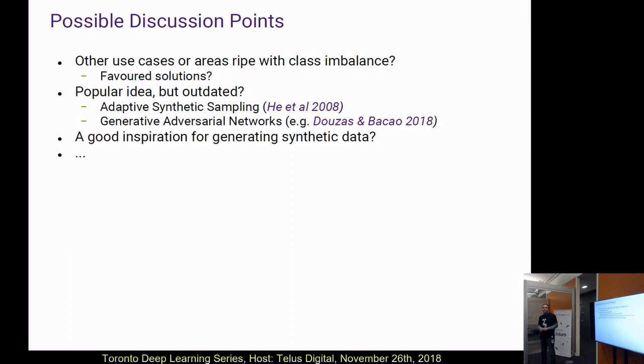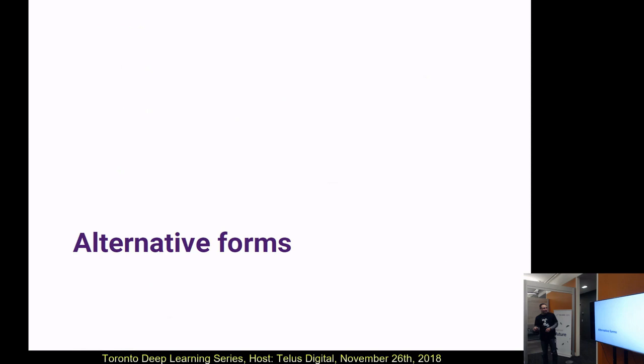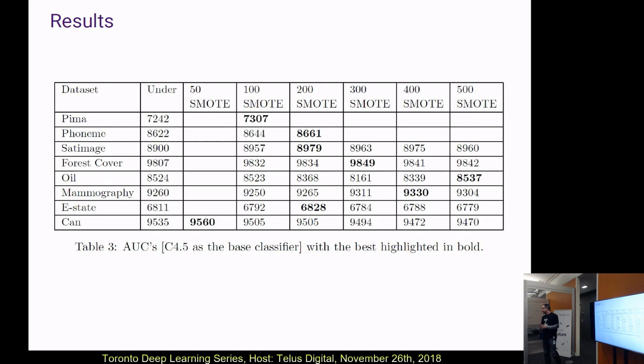Can we address any clarification questions first, then move on to the discussion points? Can we please move to the slide that shows the table with different parameters versus the other method — the one where SMOTE underperforms or overperforms depending on its parameter settings?